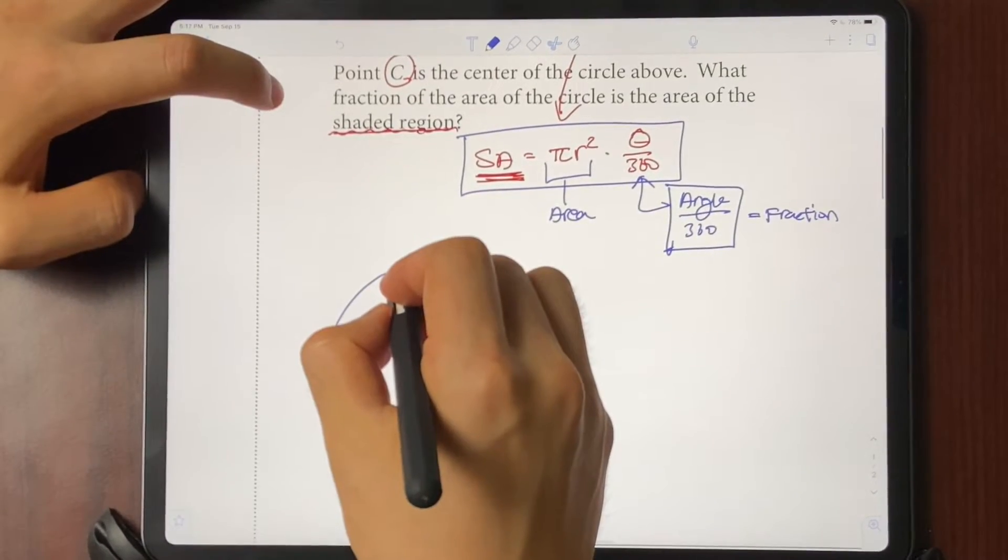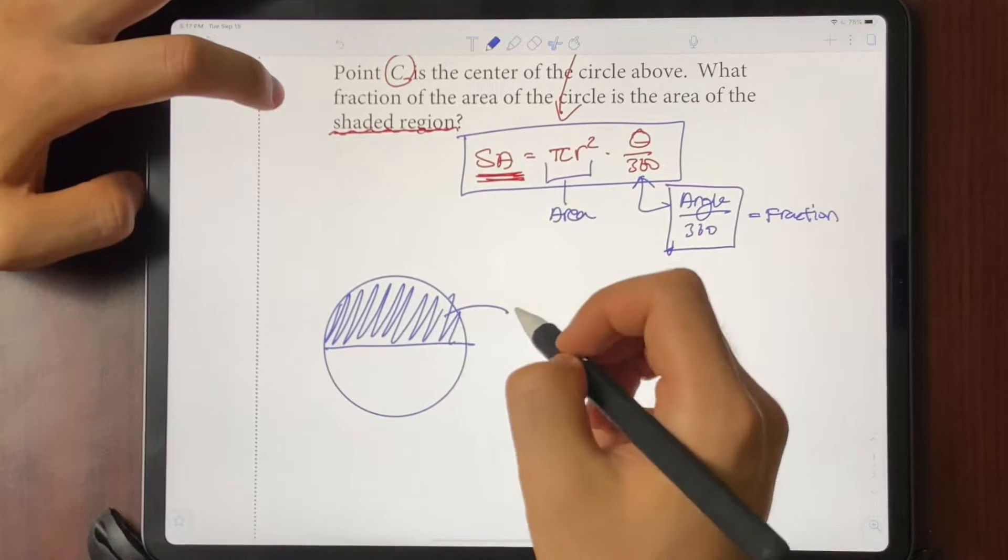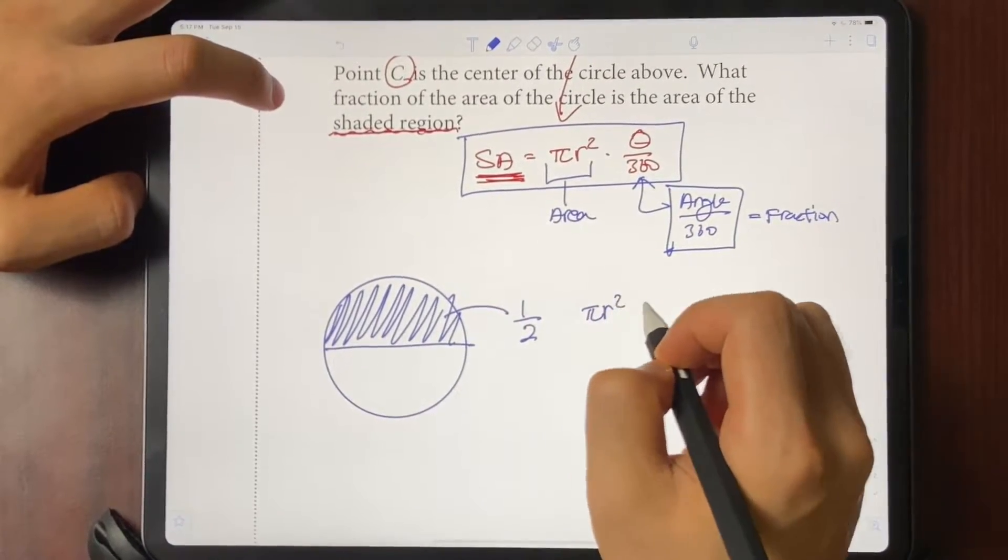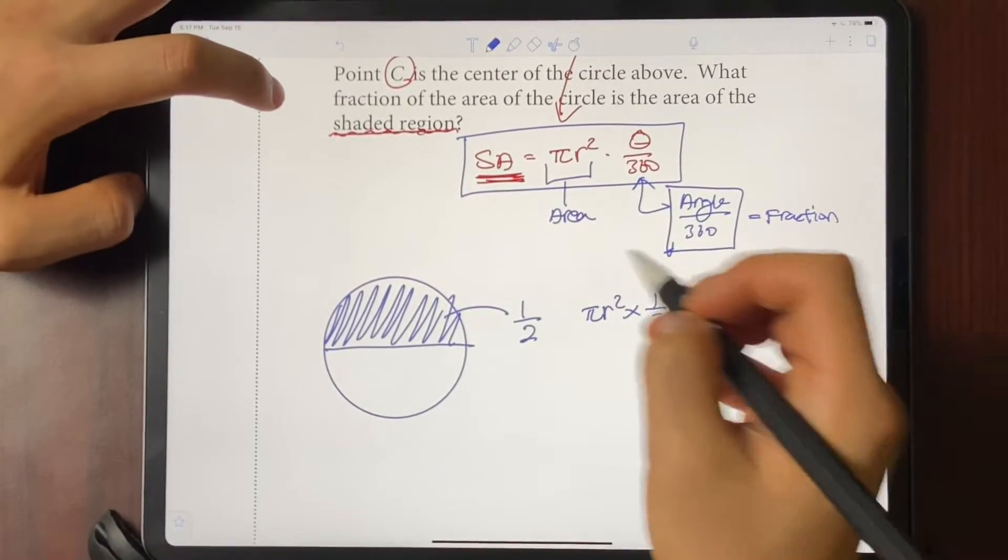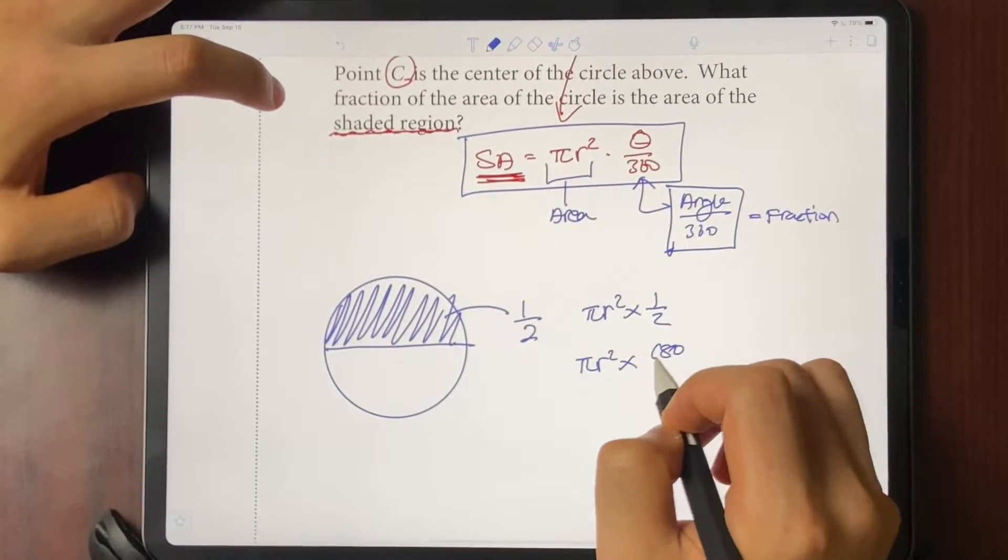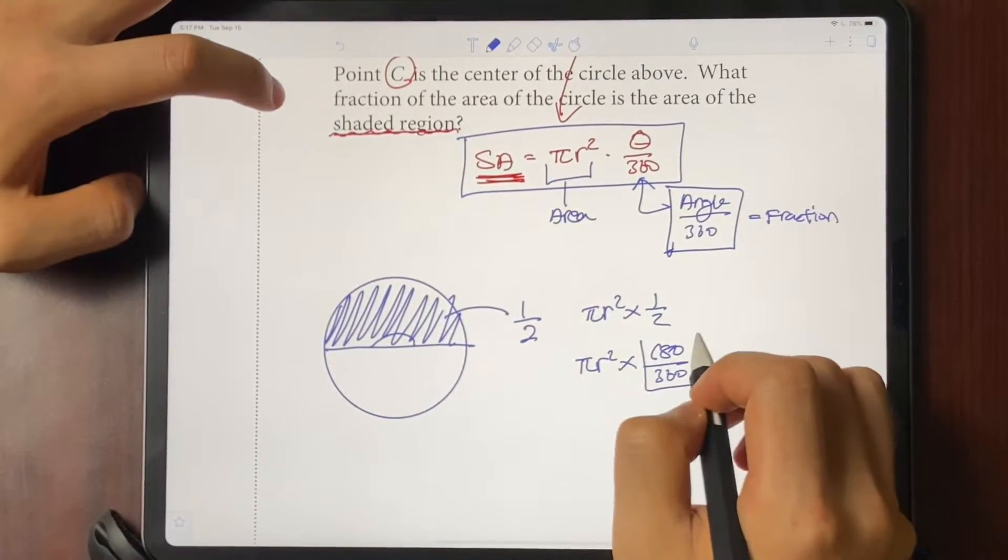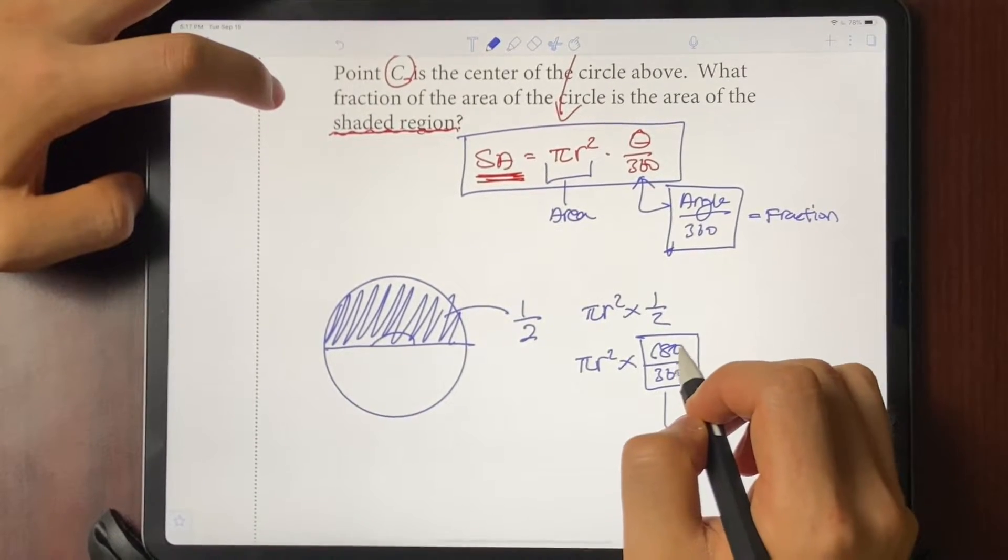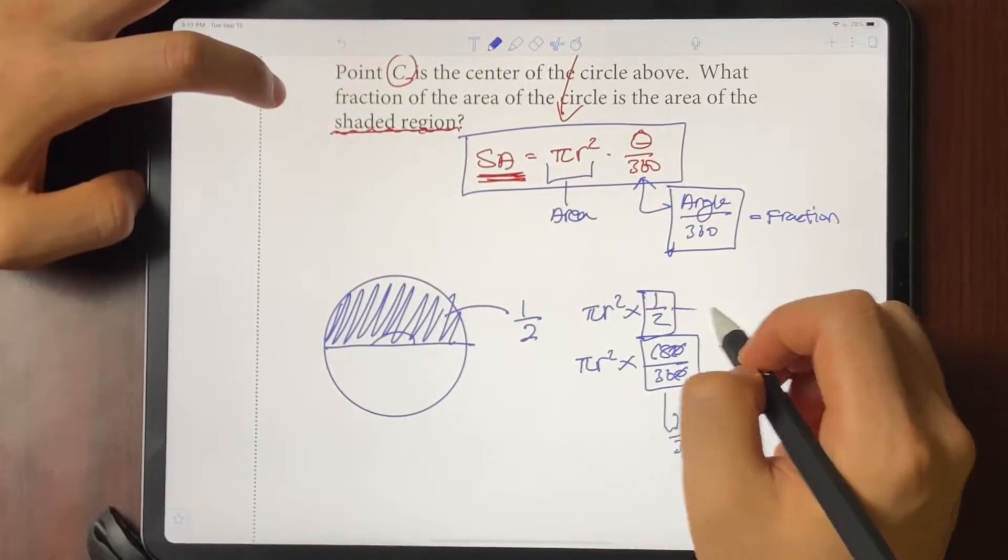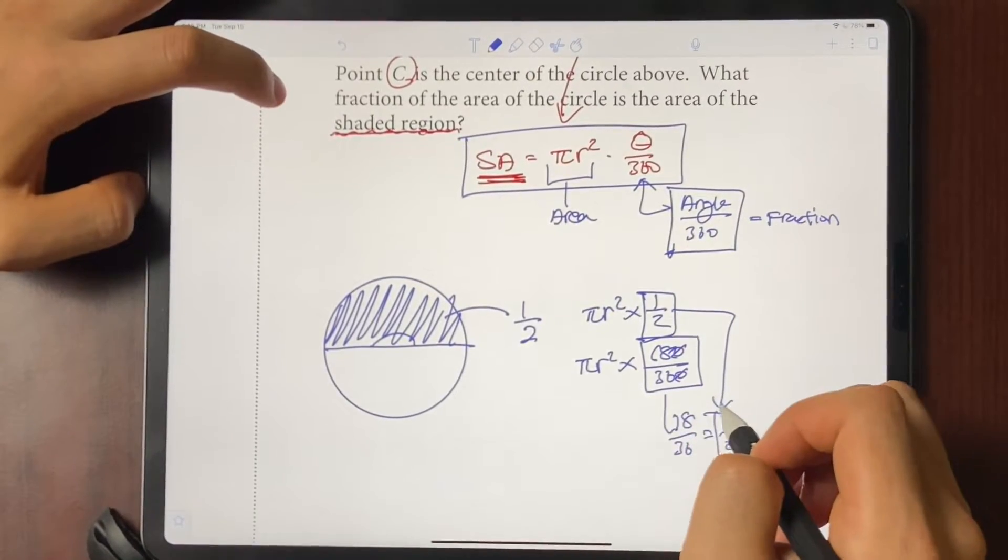Here's what I mean. Let's say we have a circle right here. And let's say we are trying to find the area of a semicircle. Obviously, the area of the semicircle is going to be one half of the total circle. So you would just do pi r squared times one half. But if you were to use the sector area formula, it would just come out to pi r squared times 180 over 360. Because the angle here would be 180. And if you think about it, this 180 right here can be simplified down to 18 over 36, which comes down to one half. So do you see how there is going to be a matching set of numbers here? Is it a coincidence that they are matching? No.